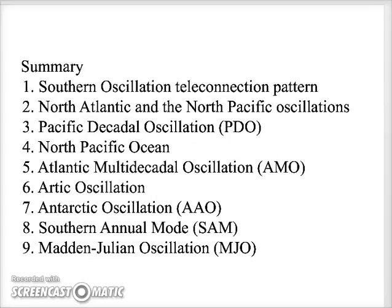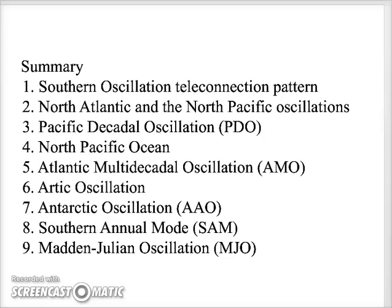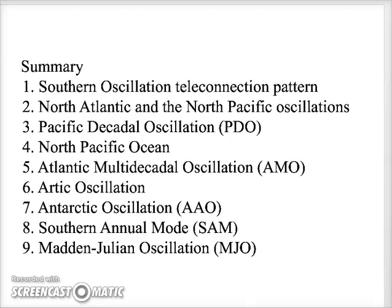The Pacific Decadal Oscillation (PDO) features a warm Eastern and cool Western North Pacific Ocean in its positive phase and vice versa in its negative phase; each phase lasts 20 to 30 years. The Atlantic Multidecadal Oscillation (AMO) is the Atlantic counterpart of the PDO, with an amplitude of about 0.4 degrees Celsius and a period of about 70 years. Major droughts in the Midwest and Southwest United States were more severe during the AMO warm phase in the 1930s and 1950s.